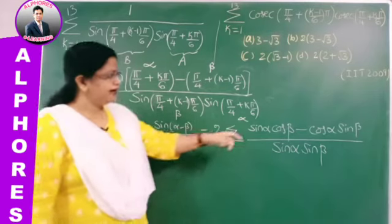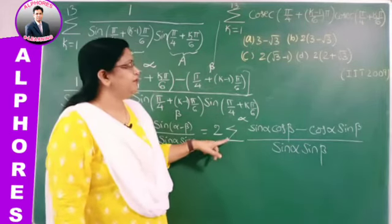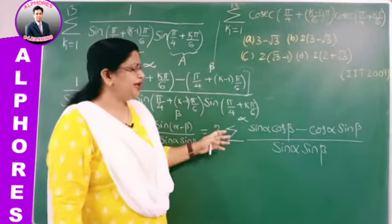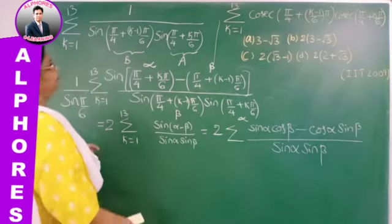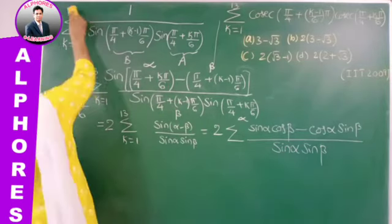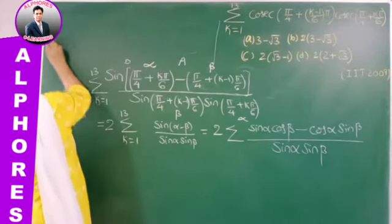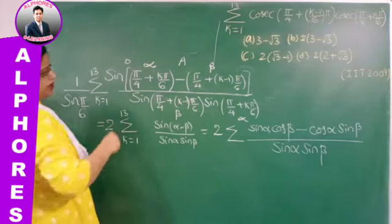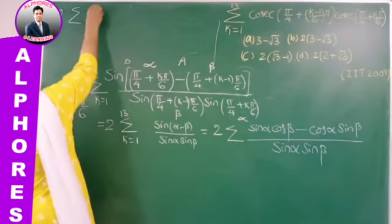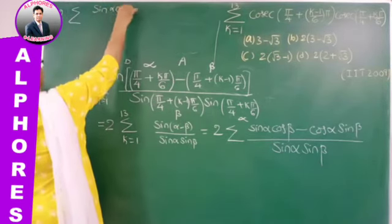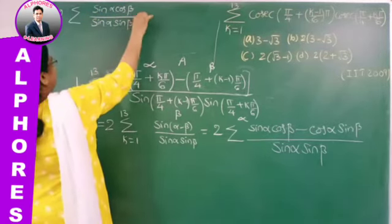Now substitute K = 1, 2, 3, …, 13. For K = 1: cot(π/4) − cot(π/4 + π/6). For K = 2: cot(π/4 + π/6) − cot(π/4 + 2π/6). Continuing to K = 13: cot(π/4 + 12π/6) − cot(π/4 + 13π/6). This is a telescoping series — adjacent terms cancel.